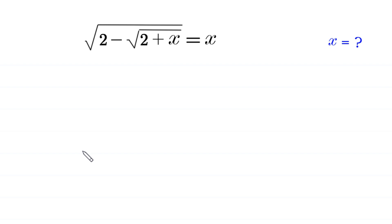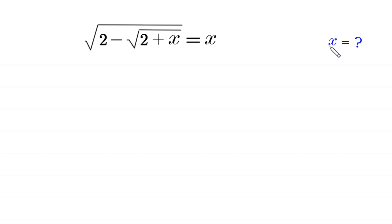Hello, welcome to how to solve this very nice radical equation. Square root of 2 minus square root of 2 plus x is equal to x. We need to find all possible values of x. So, let's start.